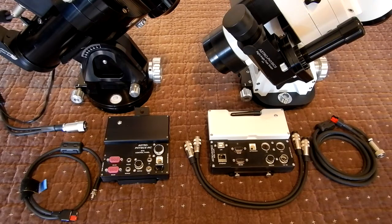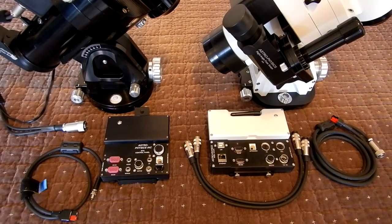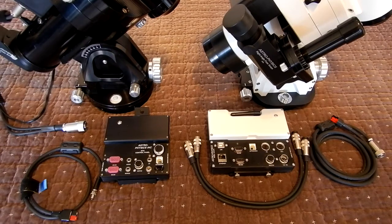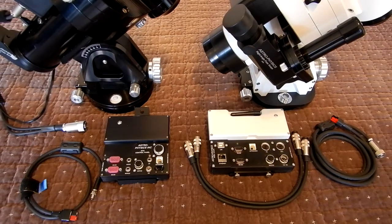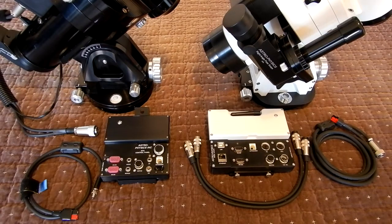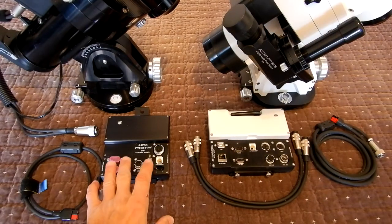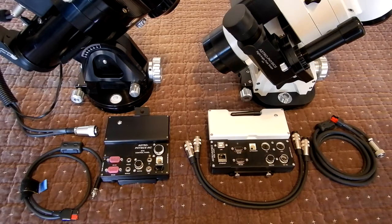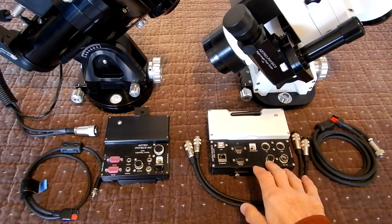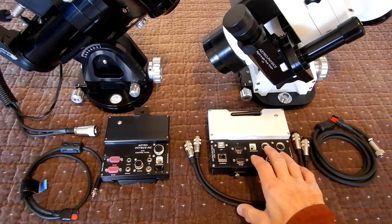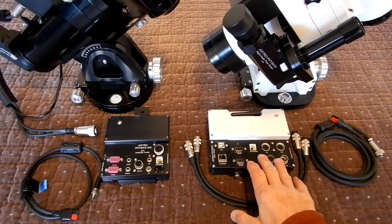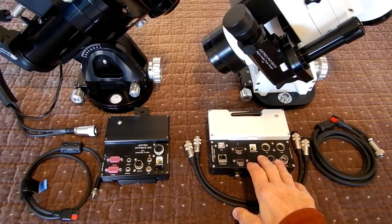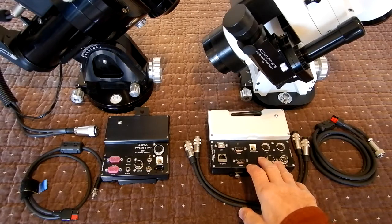So next we want to take a look at the power cables and the motor cables and your CPs. Now Tom has the CP3 with the Mach 1, and when Astrophysics came out with the Mach 2, they have a dedicated CP5 strictly for the Mach 2.